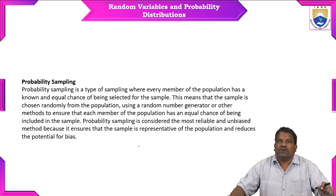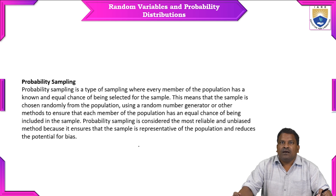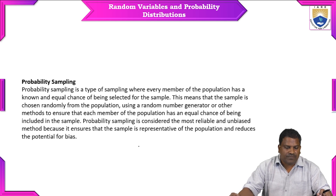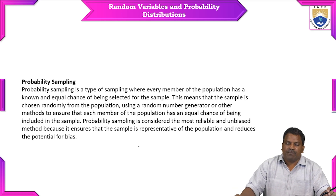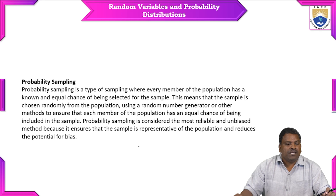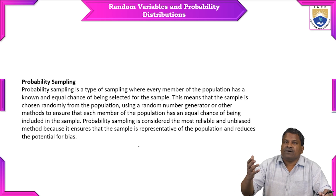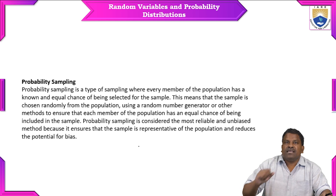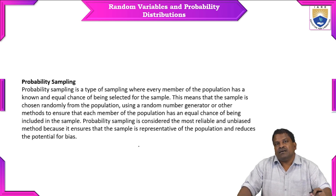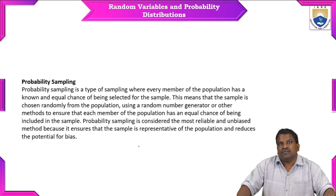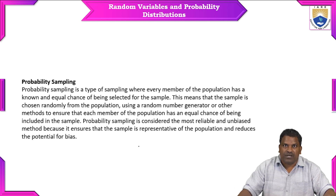In our probability sampling, so many things we can discuss. Probability sampling is a type of sampling where every member of the population has a known and equal chance of being selected for the sample. Wherever you take data — for example, in electioneering — those psephologists won't go to each and every house. They will take some sample from a given data.